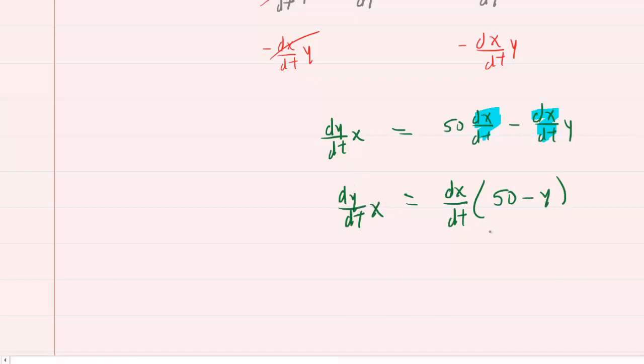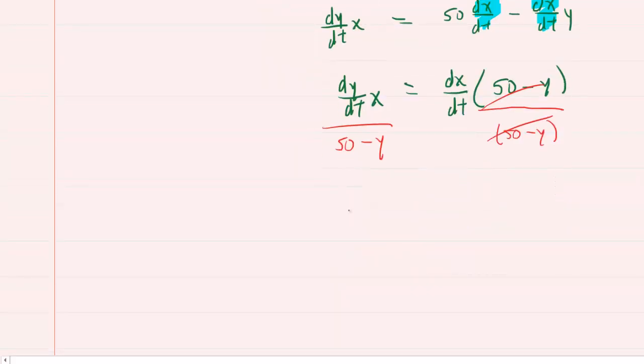And finally, to solve for dx/dt, we will divide both sides of this equation by 50 minus y. These will cancel out, and we have our final expression for our dx/dt. Apparently, it's equal to dy/dt times x divided by 50 minus y.